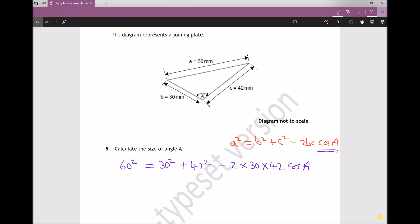The first thing I'm going to do is subtract 30 squared and 42 squared from each side. The reason I'm doing that is because the thing I'm trying to find, cos A, is tied up in this expression here. I'm going to isolate the expression that contains the thing I'm trying to find.